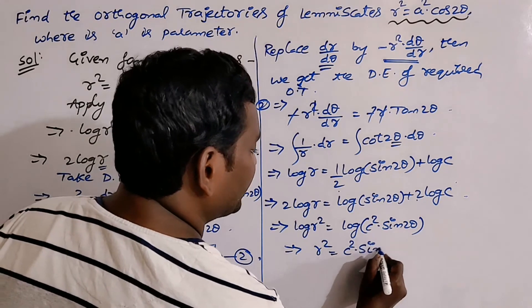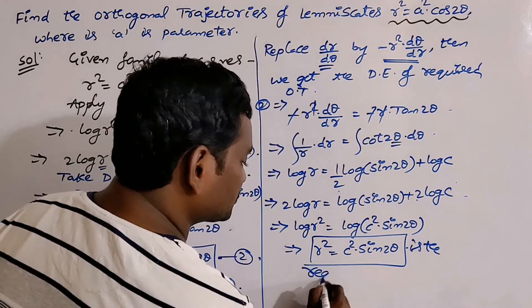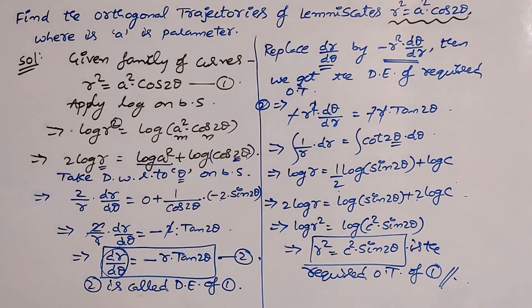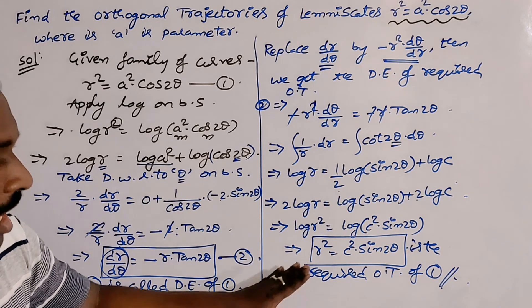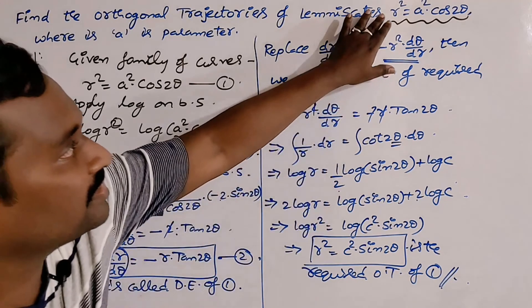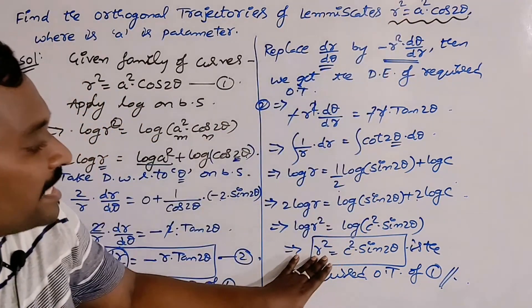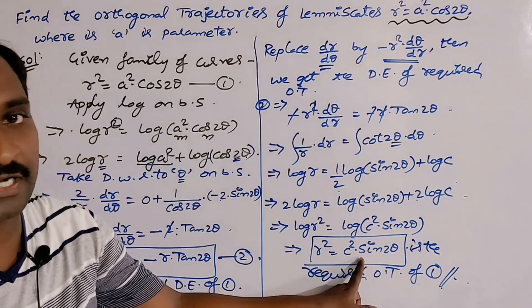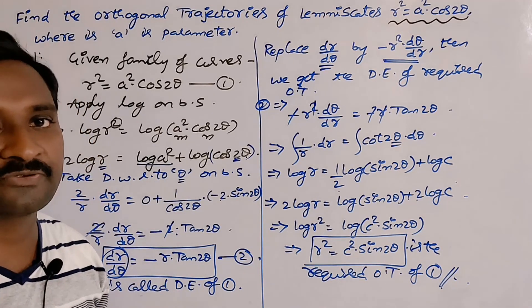Therefore, r² = c²·sin2θ. This is the required orthogonal trajectories of the given family. Notice that in polar coordinates, the orthogonal trajectory is often in a similar form to the original family. Here, the original had cos2θ and the orthogonal trajectory has sin2θ. In most problems, if cos2θ is in the original, you will get sin2θ in the orthogonal trajectories.